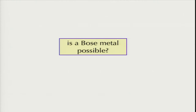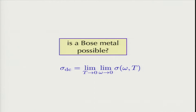Is a Bose metal possible? We need to compute the conductivity of a model in which the basic excitations are bosons, and we need to do so in the proper order of limits — working in the collision-dominated regime. We take the limit in which frequency goes to zero first, and then take the limit that T goes to zero. We have to work in the regime in which the thermal excitations of the order parameter govern the relaxation of the system. All the results I will present were derived with this order of limits.